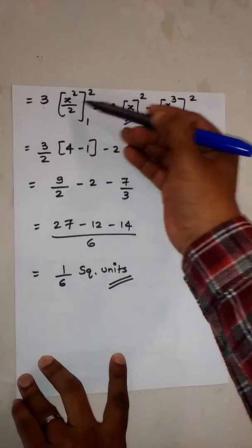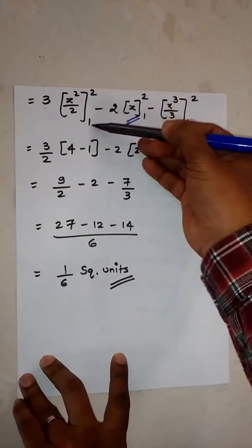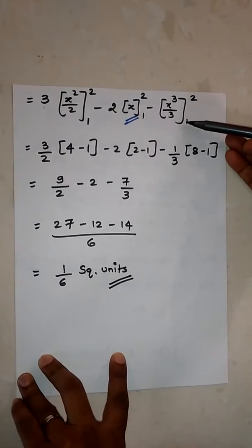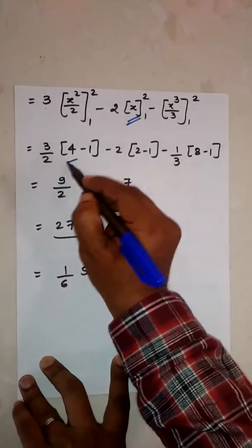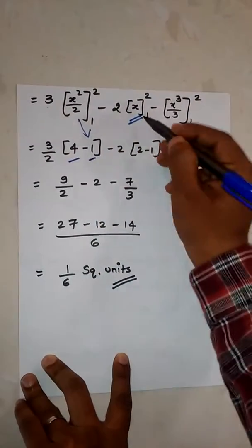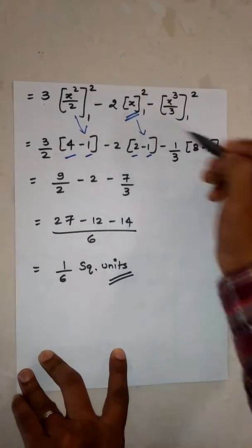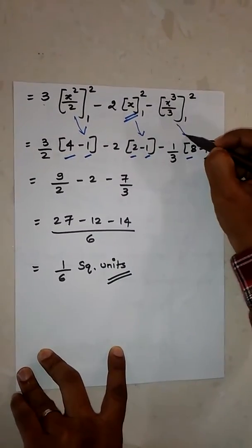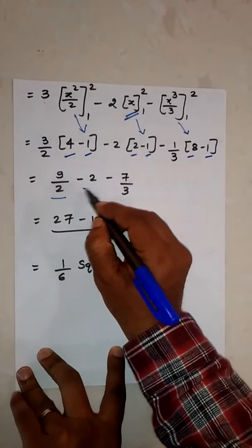And for each and every term, limit 2, 1. Now replace upper limit, lower limit for this, upper limit, lower limit for this, upper limit, lower limit for this. So 9 upon 2 minus 2 minus 7 upon 3.